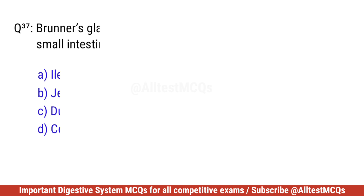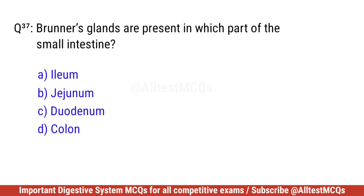Question number thirty-seven. Brunner's glands are present in which part of the small intestine? Right option is D. Duodenum.